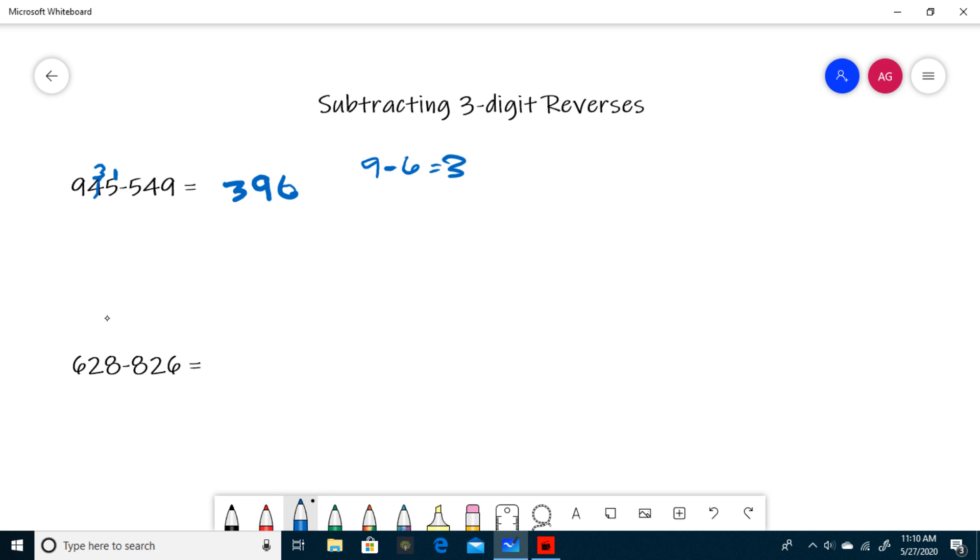Well, what we have to do is realize that if you flip two numbers around in your subtraction equation, for example 7 minus 3 and 3 minus 7, 7 minus 3 is 4, 3 minus 7 is negative 4.